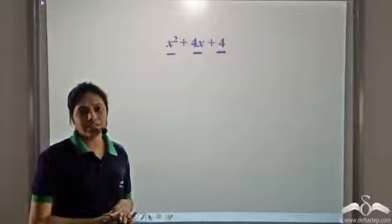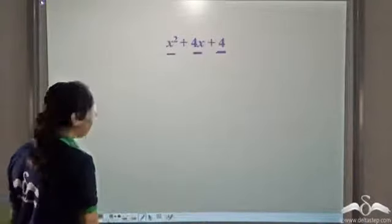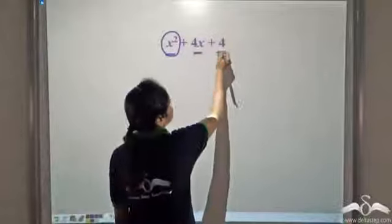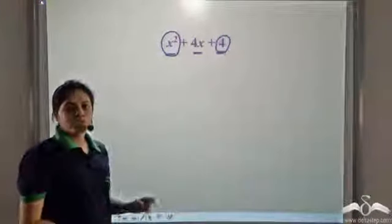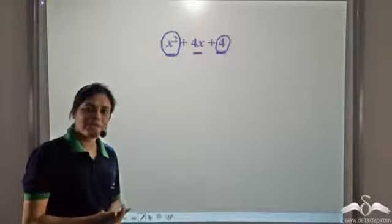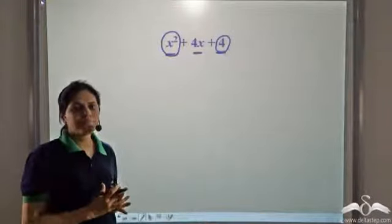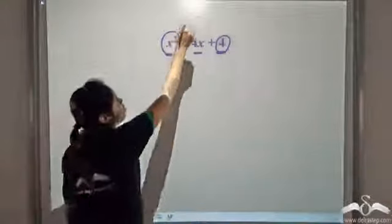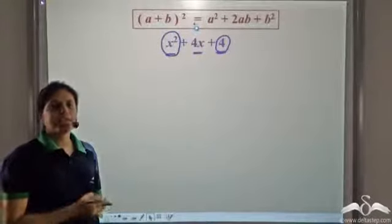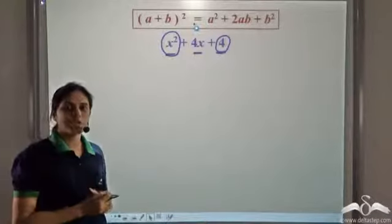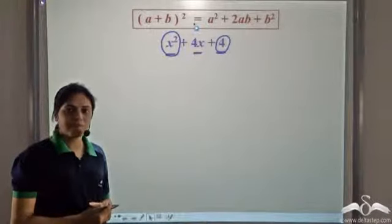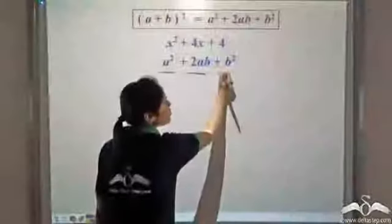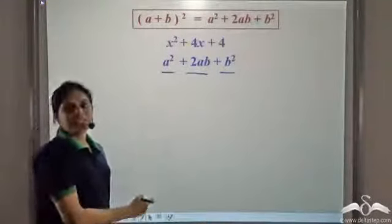So how do we factorize it? If you observe closely, you will find that this is the square of x and this is the square of 2. So we have two terms which are squares. Can you think of some identity containing two square terms? Recall this identity: (a + b)² = a² + 2ab + b².